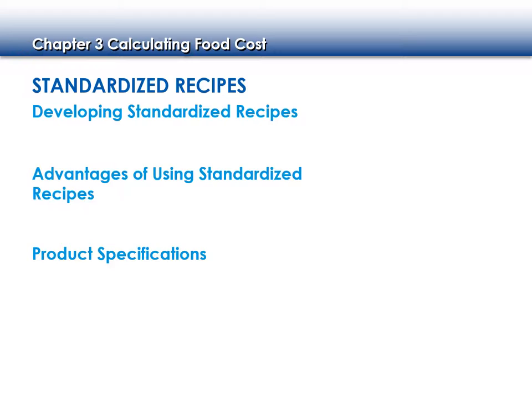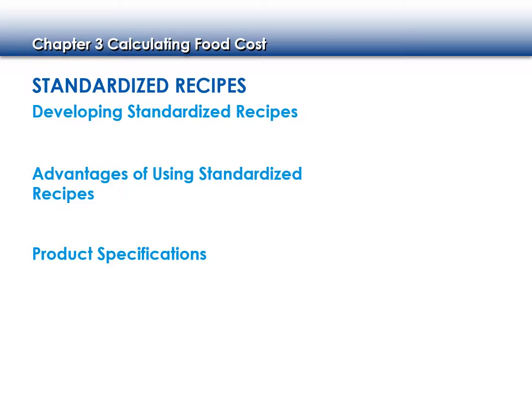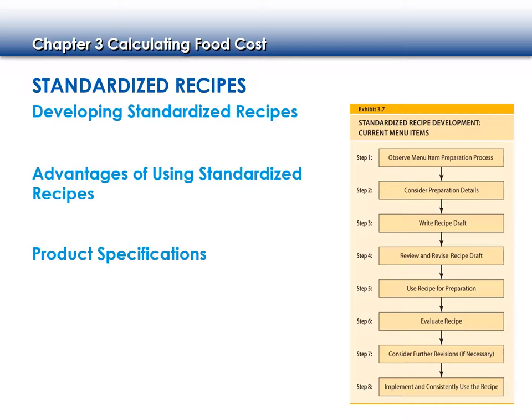Those product specifications also list which substitutions are appropriate. Now we're going to cost out some standardized recipes. Here are a couple of points to write down: number one — volume and weight are not always equal.